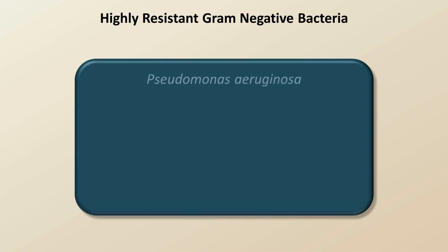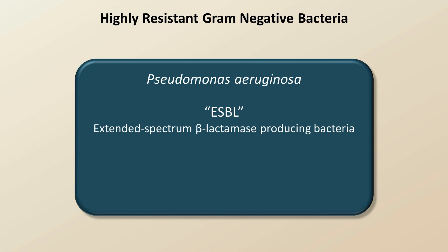Based on how they impact the clinical care of a patient, I personally consider the highly resistant gram-negatives to be: first, Pseudomonas; second, ESBL. ESBL is an interesting term that many doctors use grammatically as if it were a specific bacterial species in itself. But ESBL actually stands for extended-spectrum beta-lactamase, and the term is usually used interchangeably with ESBL-producing bacteria. ESBL-producing bacteria are always aerobic gram-negatives, most commonly strains of E. coli and Klebsiella.